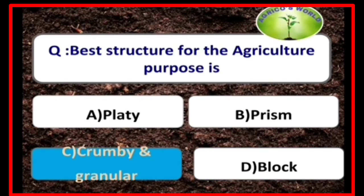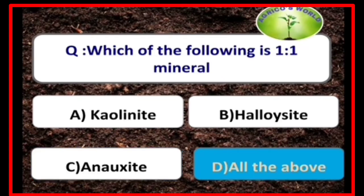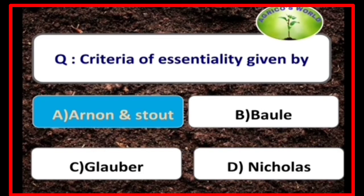Crumb and granular structure is the best structure for the purpose of agriculture. Kaolinite, halloysite, and anauxite are all 1:1 type minerals.